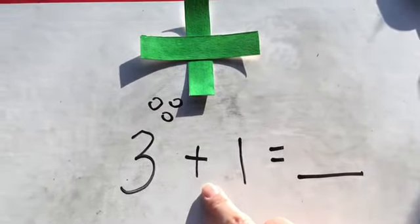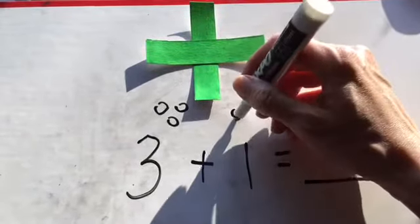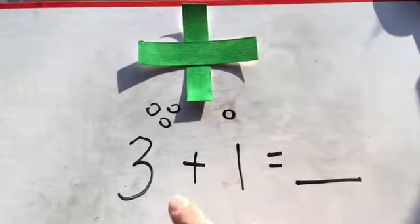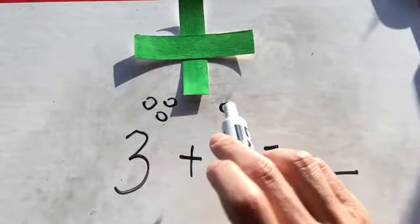Now what do I do if it's a plus sign? I'm going to add one more because this is one, so I'll put a circle here. Now let's count how many we have all together. One, two, three, four.